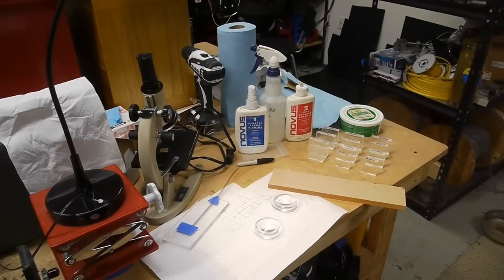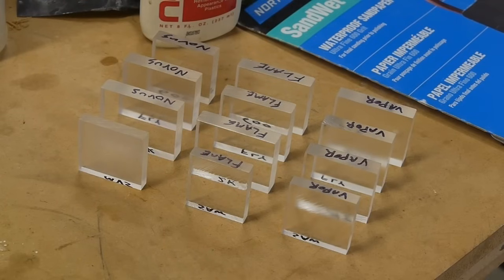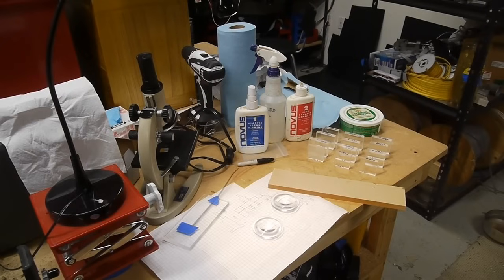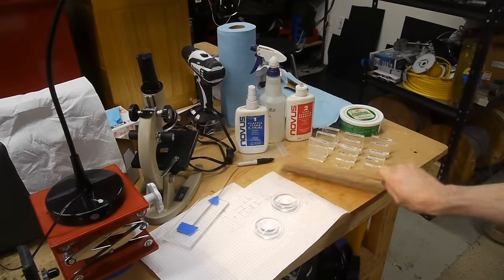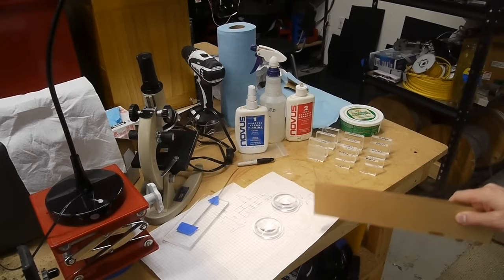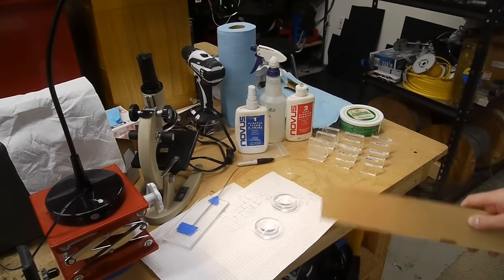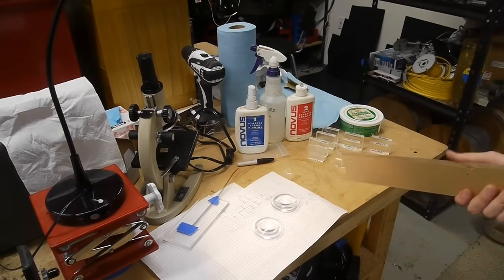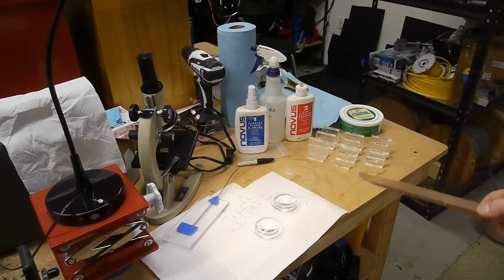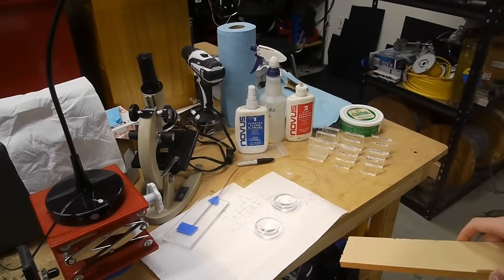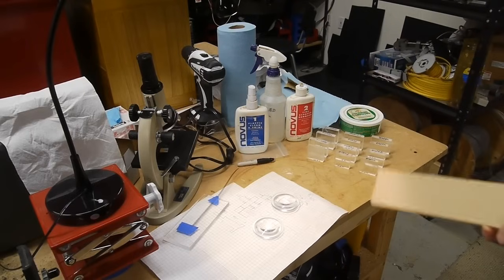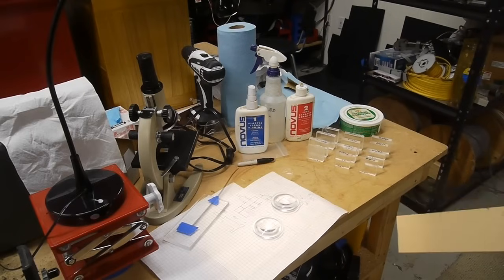Before starting on the lenses themselves, I wanted to have a few test coupons to see what these techniques would actually do. No use wasting the lenses on things that aren't going to work. I chose some cast acrylic that's almost certainly the same material the lenses are made out of. I bought the lens material from McMaster and it's cast acrylic, and this is also cast acrylic from McMaster, but it's possible it's slightly different because the lenses were cut from a rod and this is obviously a sheet.